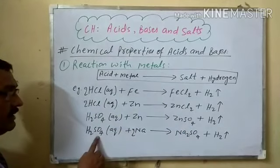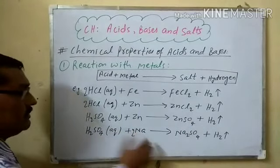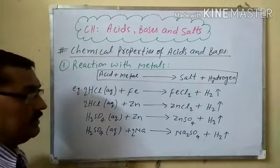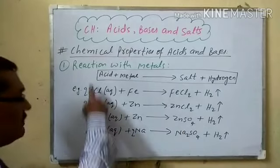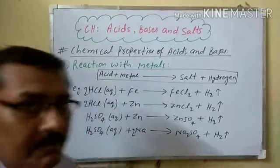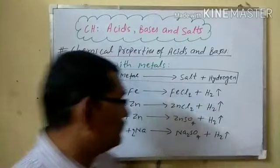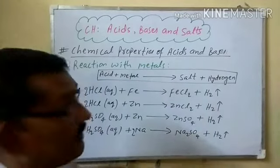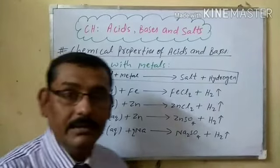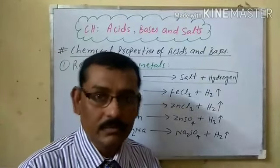Similarly, H2SO4 sulfuric acid with sodium metal forms sodium sulfate. The salt formed is clear from which metal and which anionic part of the acid are combined together. You can easily figure out the product by knowing which acid and which metal are involved.